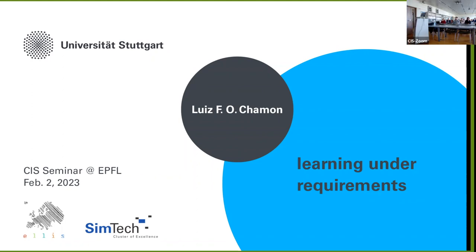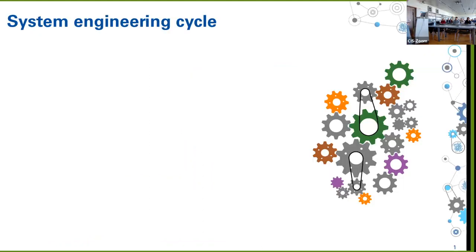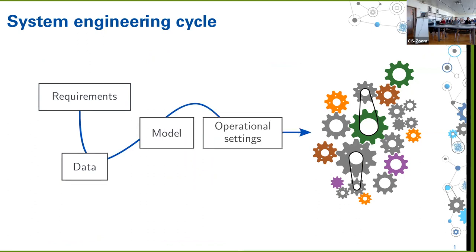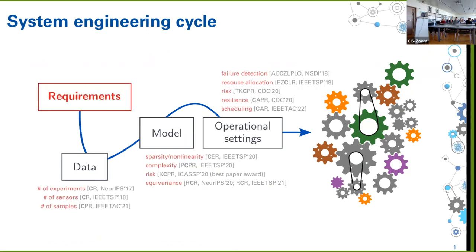To understand why I got interested in learning under requirements, it's useful to look at the current state of learning in engineering. The traditional cycle for designing systems in engineering is: have an engineer set requirements, acquire data, build models, and then optimize operational settings. A lot of my work over the years has been about adding requirements to each stage of this cycle — from discrete constraints on the number of experiments to resilience in control.